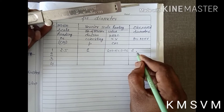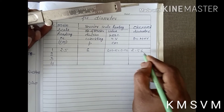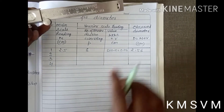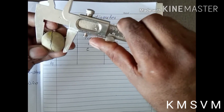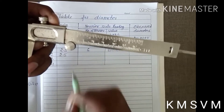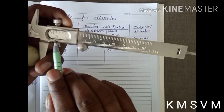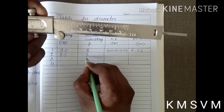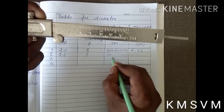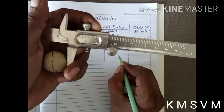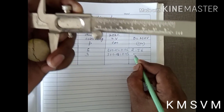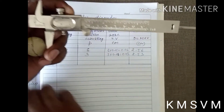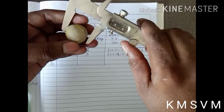So the object value will be 2.56 cm. Now in the perpendicular direction, we take a second reading. The main scale reading remains 2.5 cm, but now the third division is coinciding, so 3 × 0.01 = 0.03, giving a reading of 2.53 cm.